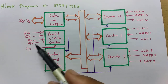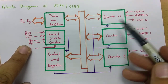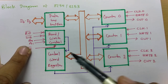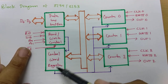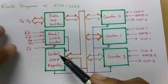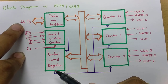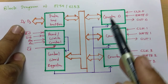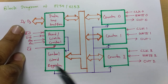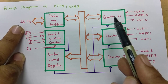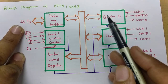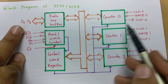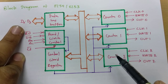A0 and A1 select the counter: 00 selects Counter 0, 01 selects Counter 1, 10 selects Counter 2, and 11 selects the Control Register. Data is exchanged through D0 to D7. Counter 0, for example, counts data based on clock and gate input, producing output accordingly — and the same applies for Counter 1 and Counter 2.